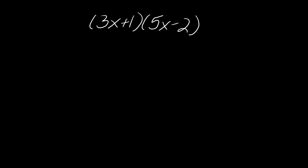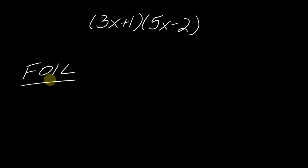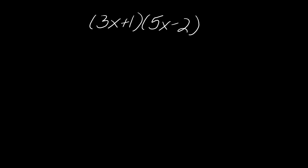Now let's talk about a slightly more interesting case — I've got two entire polynomials multiplying together. The phrase I always hear is to foil. I don't actually love the term foil — it stands for first, outside, inside, last. I don't like this because it breaks down if you have any situation besides the one we're looking at here. So I'm going to show you a different way to think about this so you can apply this method to anything. What we're trying to do is multiply everything in here by everything in here, once.